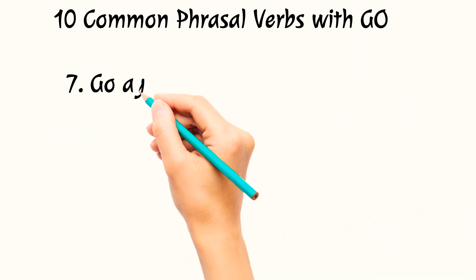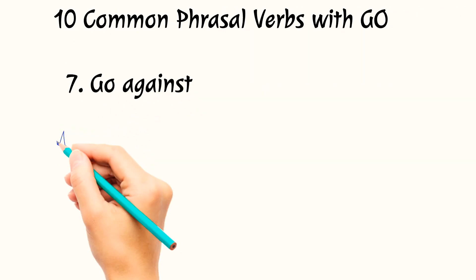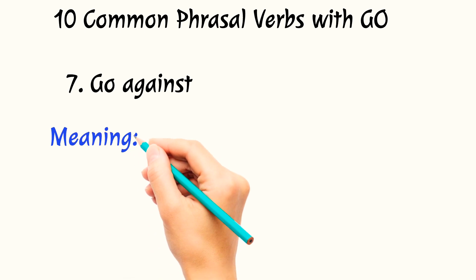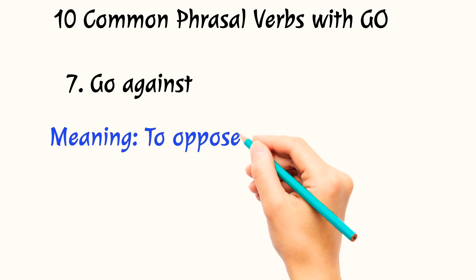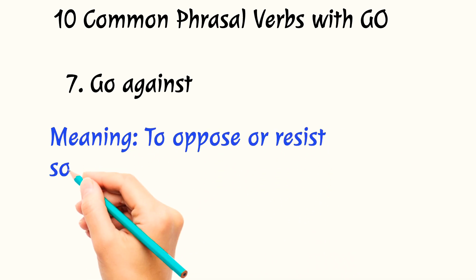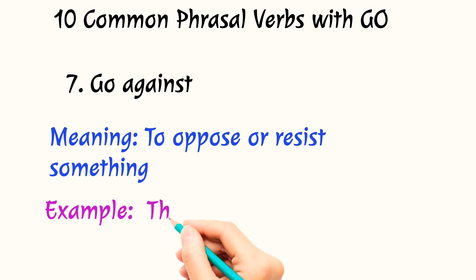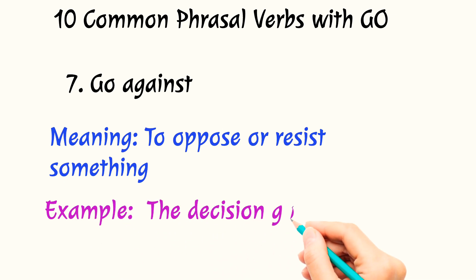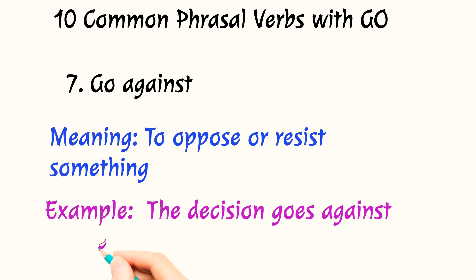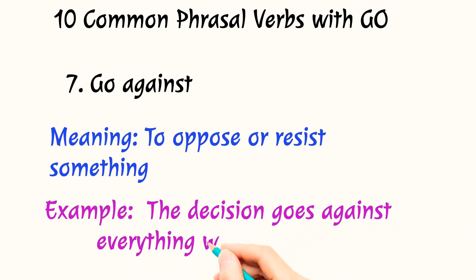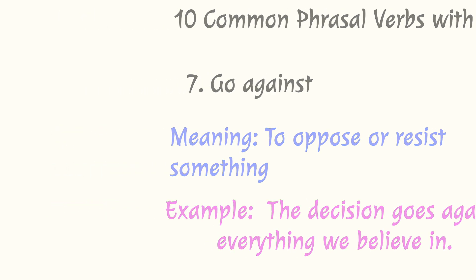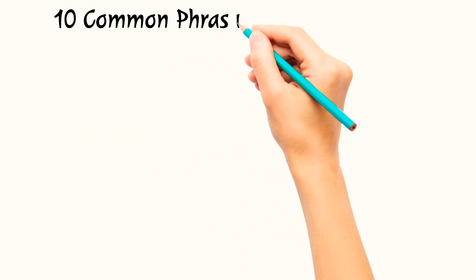The seventh phrasal verb is 'go against.' It means to oppose or resist something. For example: the decision goes against everything we believe in.